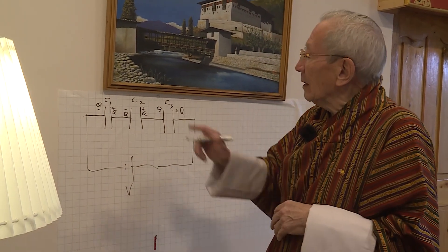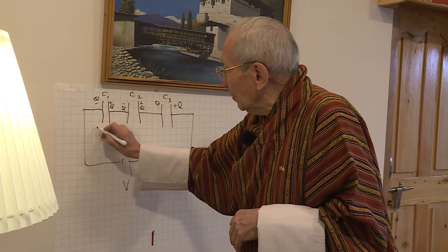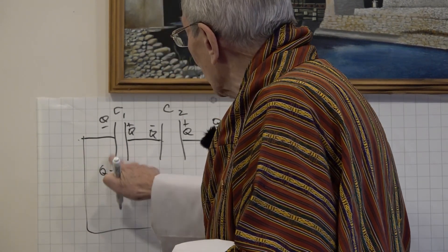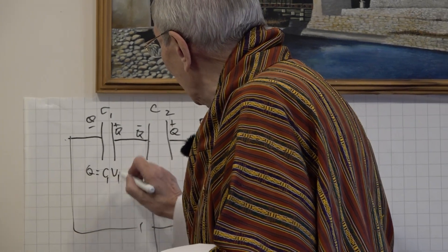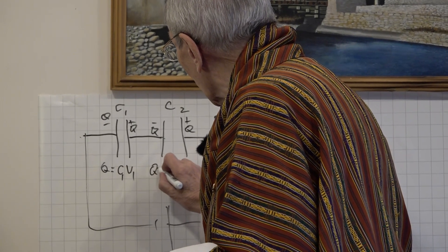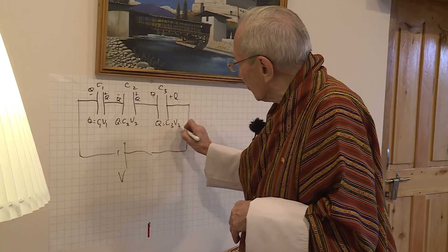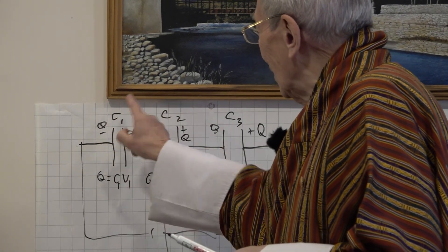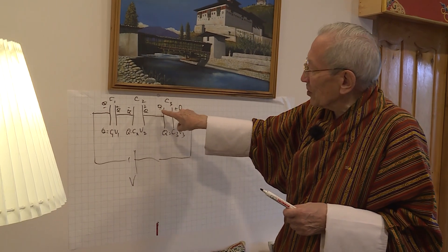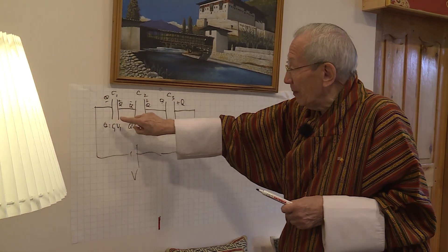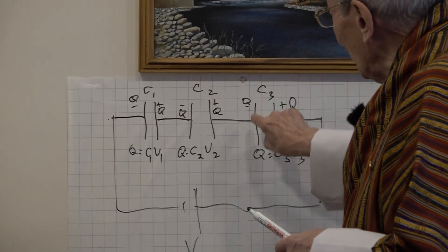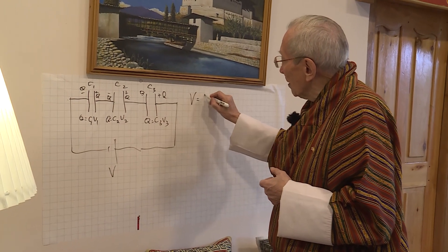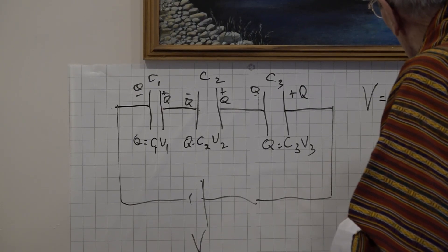Now, voltage V, we know that Q equals CV. So, the charge on here will equal C1V1. The charge on there will equal C2V2. And the charge on here will equal C3V3. Q equals CV. Now, voltage across there is V1. Voltage across there is V2. Voltage across there is V3. The voltage is add up. V1 plus V2 plus V3 must equal the supply voltage. V, the supply voltage, must equal V1 plus V2 plus V3.